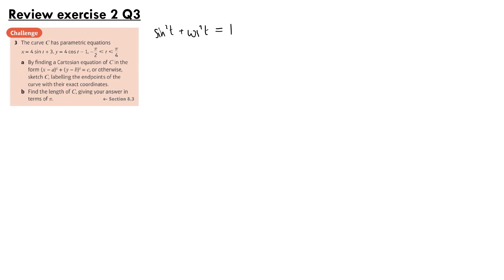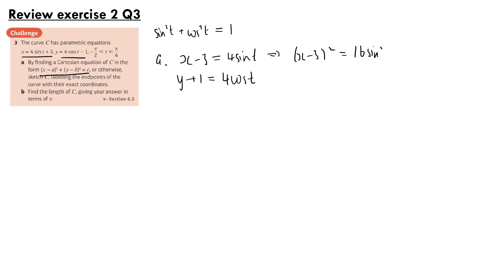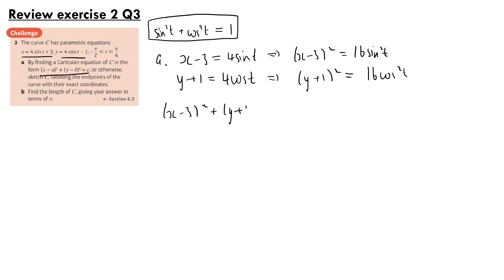To find the Cartesian equation, we use the identity sine squared t plus cos squared t equals 1 to eliminate t. Rearranging the parametric equations: x minus 3 equals 4 sine t, and y plus 1 equals 4 cos t. Squaring both: (x minus 3) squared equals 16 sine squared t, and (y plus 1) squared equals 16 cos squared t. Adding them together: (x minus 3) squared plus (y plus 1) squared equals 16(sine squared t plus cos squared t).